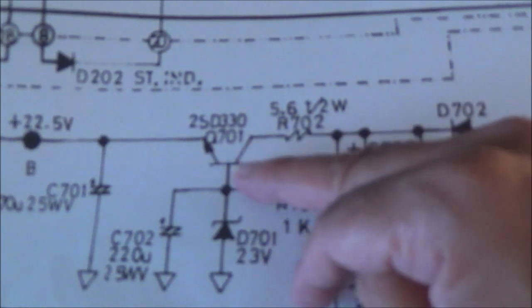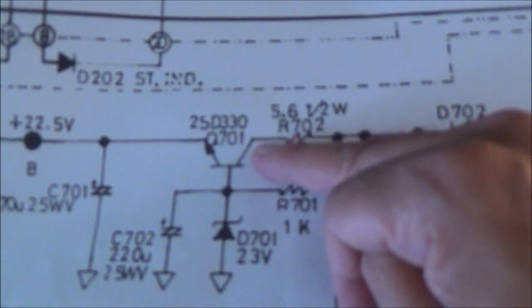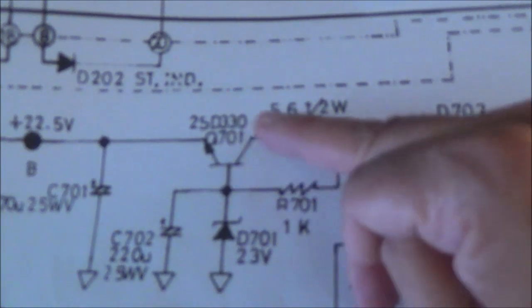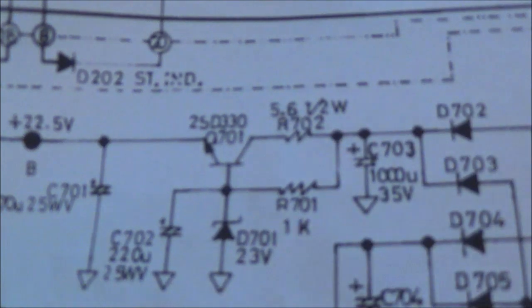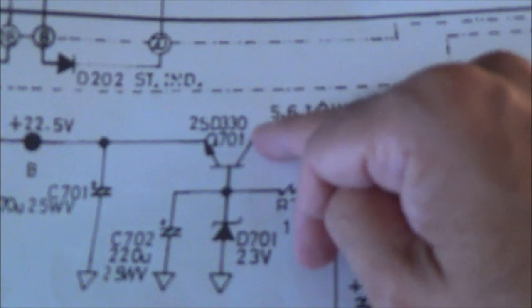These things are called series regulators and these transistors are sometimes called pass transistors, or at least they used to be called that, because basically what they do is they pass the current.